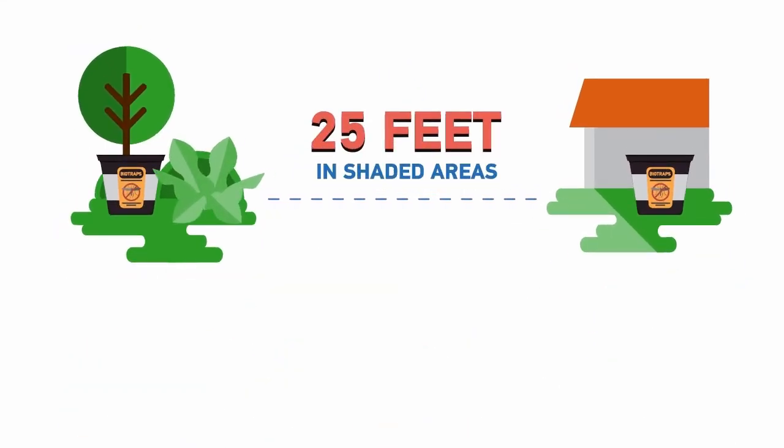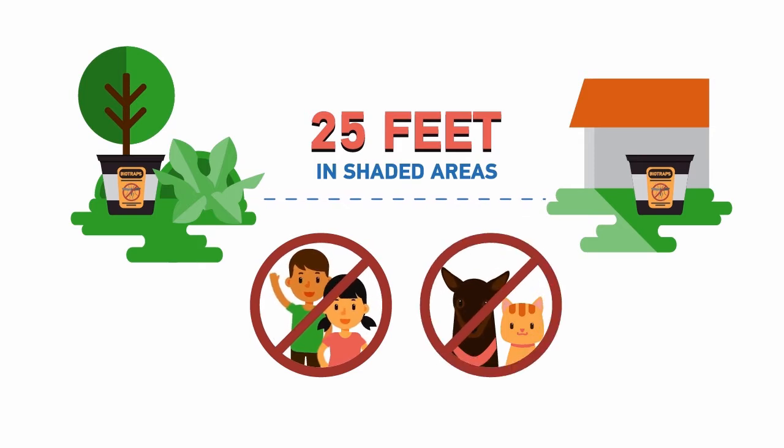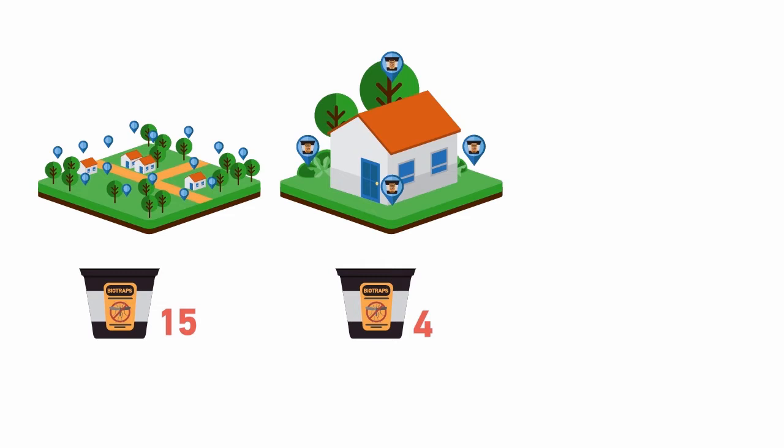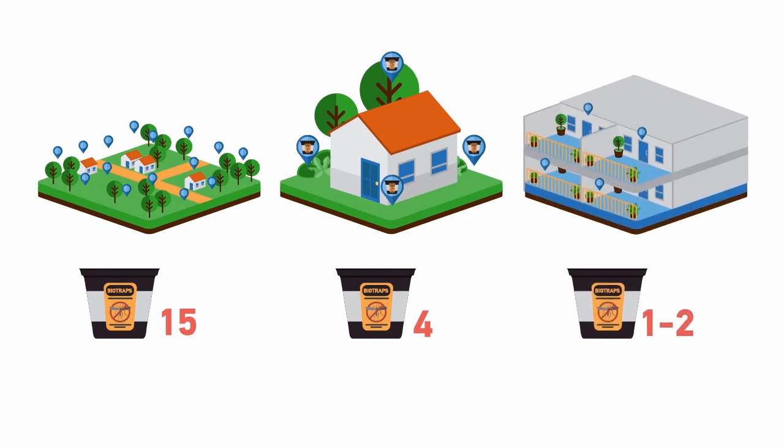Place around your property every 25 feet in shaded areas out of the reach of animals and children. 15 per acre, 4 per house, 1 to 2 per apartment.